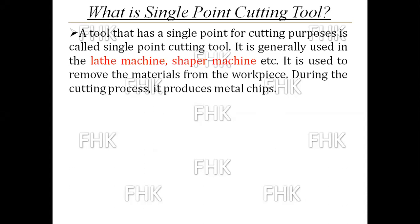What is a single point cutting tool? Generally, in the cutting process, all tools are classified as single point cutting tool and multi-point cutting tool according to the cutting point or cutting edges. A single point cutting tool — the name itself says — is when the cutting tool has a single point for cutting. It is generally used in lathe machine, shaper machine, etc. It is used to remove the material from the workpiece, and during the cutting process, the material is removed in the form of metal chips.